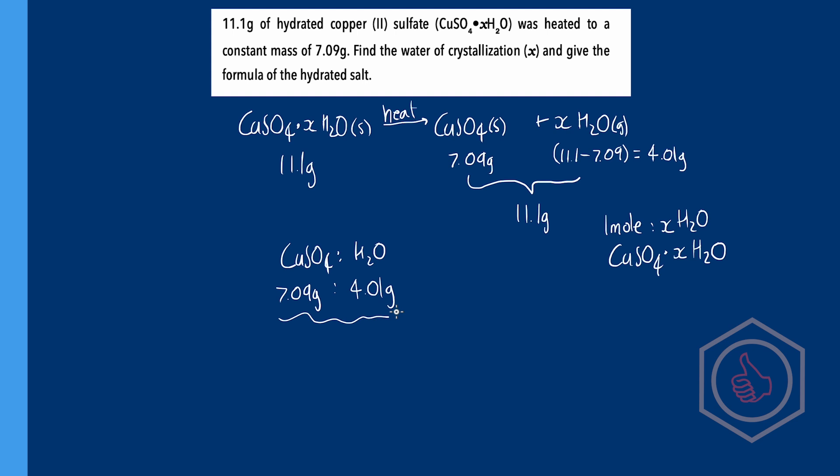To do that we use the formula n equals M over MR where M is the mass of our substance and MR is the molar mass of our substance which is calculated by adding up the relative atomic masses of all atoms in the formula.